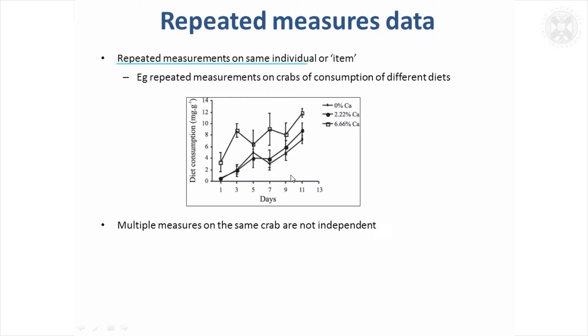Repeated measures data is when you're taking repeated measurements on the same individual or the same item. For example, in this experiment there were repeated measurements taken on crabs who were consuming different diets. We want to take into account that we're measuring the same crabs, so these data are not independent at each time point.